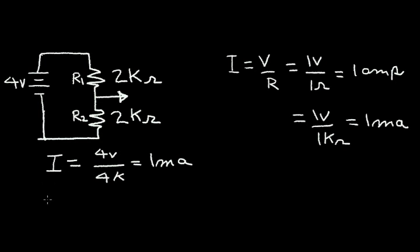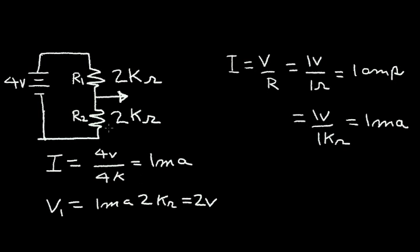Each resistor R1 and R2 has one milliamp of current flowing through it. The voltage across R1 is equal to one milliamp times two kilohms, which is two volts. So we've divided the four volts into two volts across each resistor. Since the same current flows through both resistors and they are of equal value, we get two volts across each. If the resistors in the circuit are equal, the voltage divides equally among the two resistors.